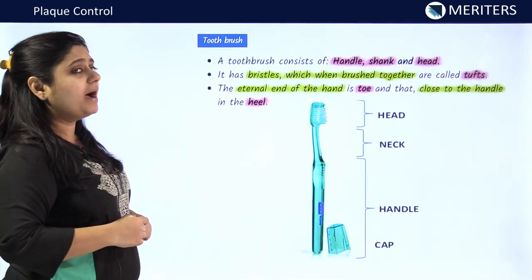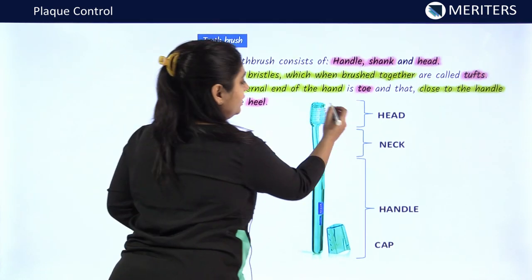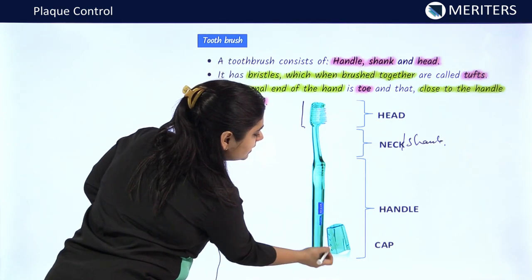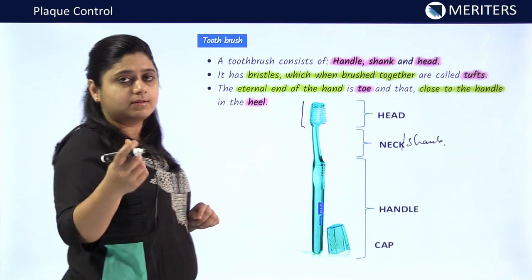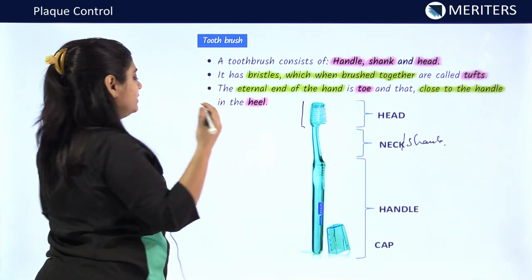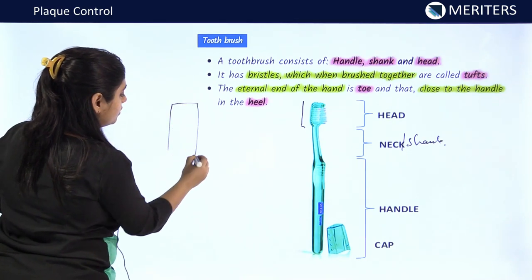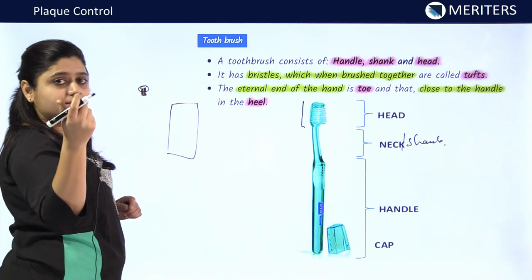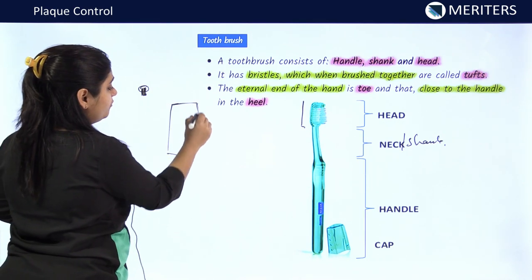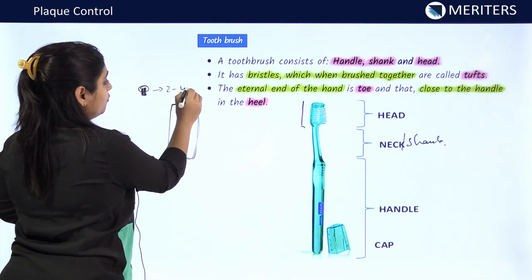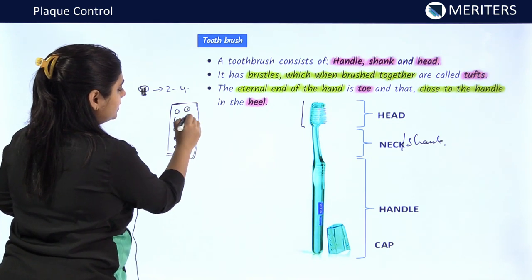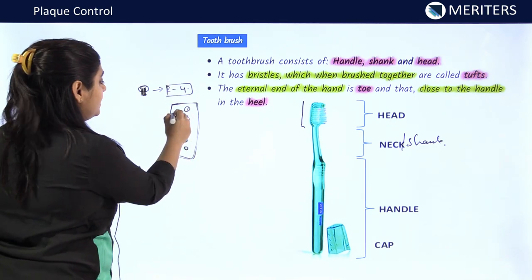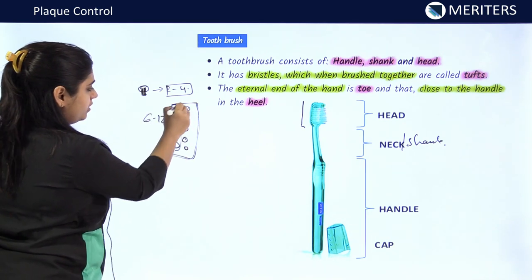Let us discuss the various parts of a toothbrush. A toothbrush consists of the head, the neck or shank portion, the handle, and the cap of the brush. The brush head contains various bristles; when bristles are bundled together they are known as a tuft. In the head of the toothbrush there are two to four rows of tufts.